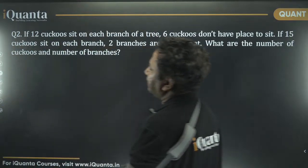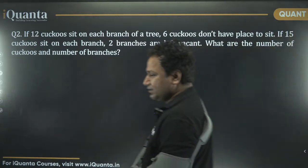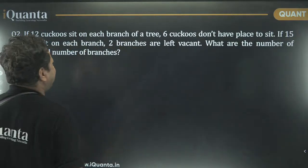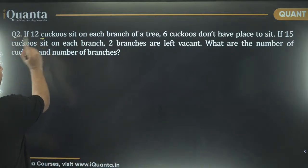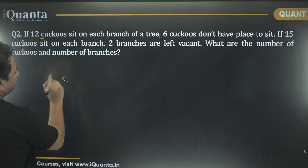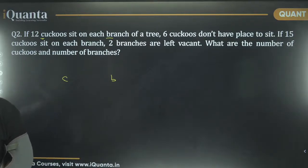Coming to the next question. If 12 cuckoos, you know what is cuckoo? Quail? Quail bird? Cuckoos sit on each branch of a tree. Six cuckoos do not have a place to sit. If 15 cuckoos sit on each branch, two branches are left vacant. What are the number of cuckoos and number of branches? So, what I normally do, I do not use X and Y that commonly. I use the letters here only. I will use C for cuckoos and B for branches. That is what I am going to use.